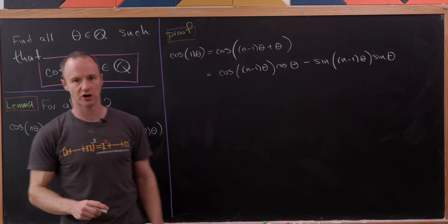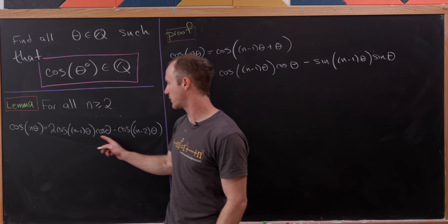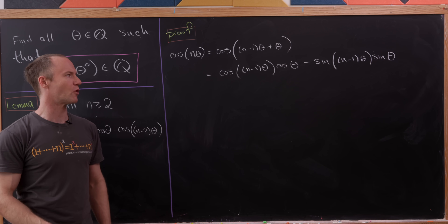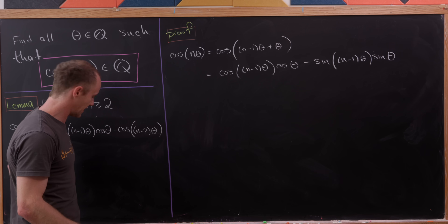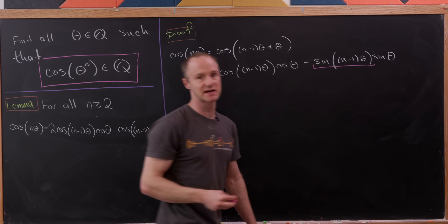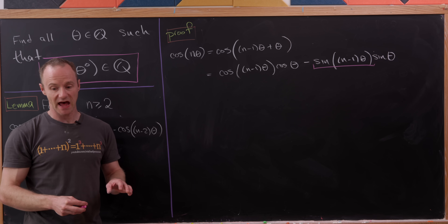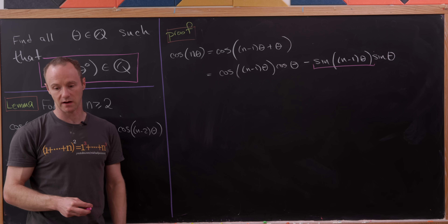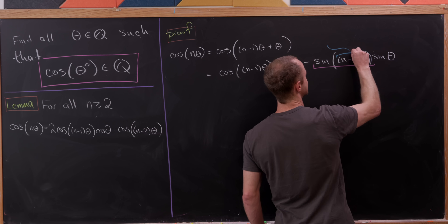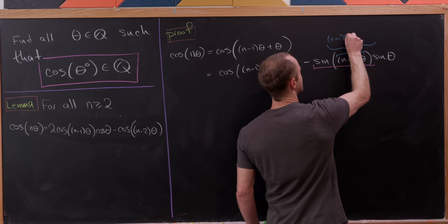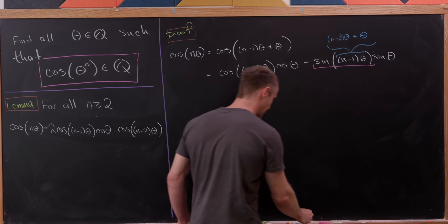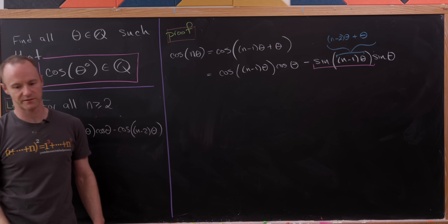This first term is the one we want, but it's attached to a 1 instead of a 2, so there's more work to do. We take sin((n−1)θ) and decompose it using an angle sum formula by writing (n−1)θ as (n−2)θ + θ, then applying the angle sum formula for sine.